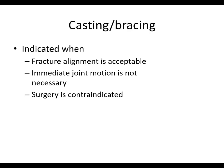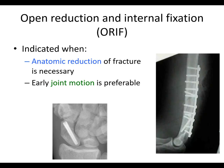Casting and bracing are indicated when fracture alignment is acceptable, when immediate joint motion is not necessary, and when surgery is contraindicated. Open reduction internal fixation is indicated when anatomic reduction of the fracture is necessary — joint surfaces need to be anatomic, so when you have a disruption of the joint surface, you usually have to open it and put it back together. Some non-articular fractures, like this humerus, are sometimes better treated with ORIF. Articular fractures especially require it.